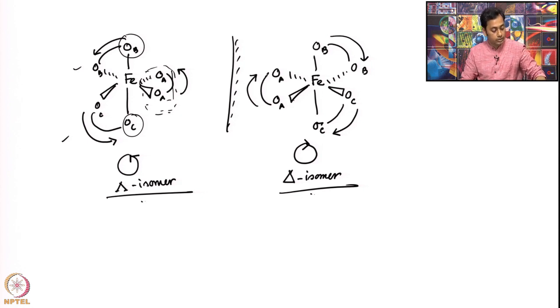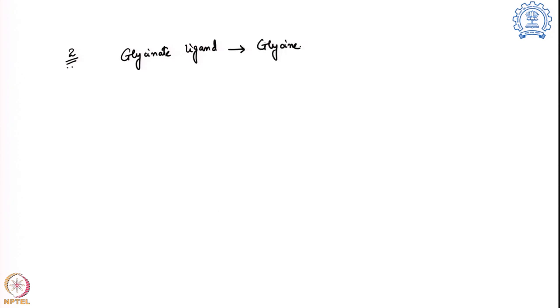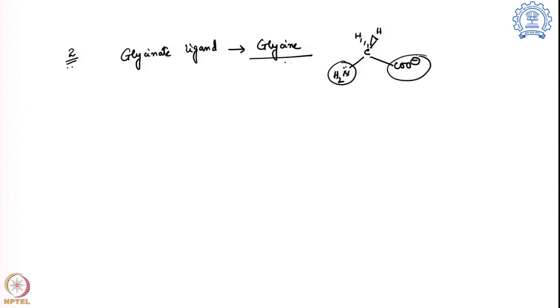Now we look at a different variant: example two, using glycinate as a ligand. Glycinate comes from the natural amino acid glycine, with structure CH2 connected to a carboxylate and an amine group. Glycine binds through the amine nitrogen and the carboxylate oxygen, so it can also act as a bidentate ligand — but with a subtle difference: the two coordination atoms are not the same; one is nitrogen and one is oxygen.